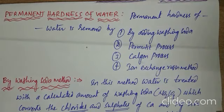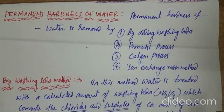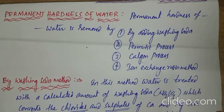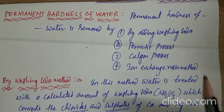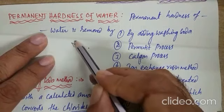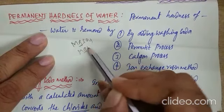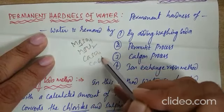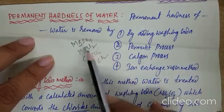Now we are going to discuss regarding permanent hardness of water. Previously we had a discussion regarding hard water, soft water and methods used for the removal of temporary hardness. The salts responsible for permanent hardness of water are only 4: MgSO4, MgCl2, CaSO4 and CaCl2. We have to remove these 4 salts by using different methods.